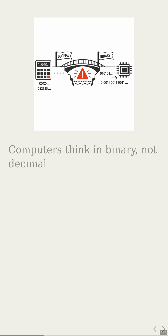Computers don't see decimals — they only see bits, 0s and 1s in base 2. So a simple decimal like 0.2025 should be easy, right?